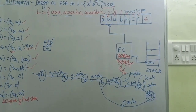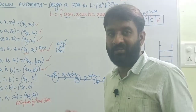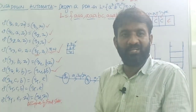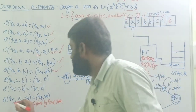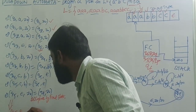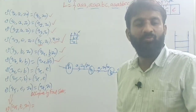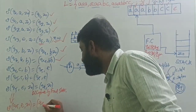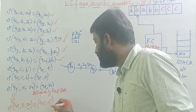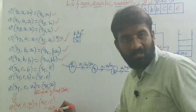This is acceptance by final state. If I want to make this design also suitable for acceptance by empty stack, we just need to add one more transition: Q5, epsilon, Z-naught — remain on the same state Q5 by removing the element Z-naught from the stack (pop operation, epsilon). Now we can say this is acceptance by empty stack as well.